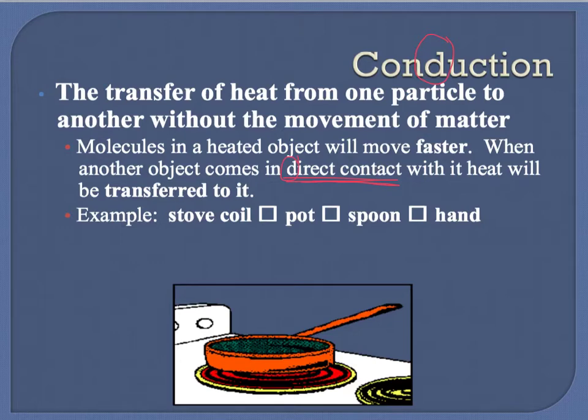So conduction equals direct contact. The example here has a picture of a pot sitting on a stove. If you've ever helped out in the kitchen — I highly suggest you do if you haven't — and you've been using a metal spoon to stir something in the pot and then set it down inside the pot and walked away for a few minutes, when you come back and try to pick up the spoon without an oven mitt, it's going to burn you.